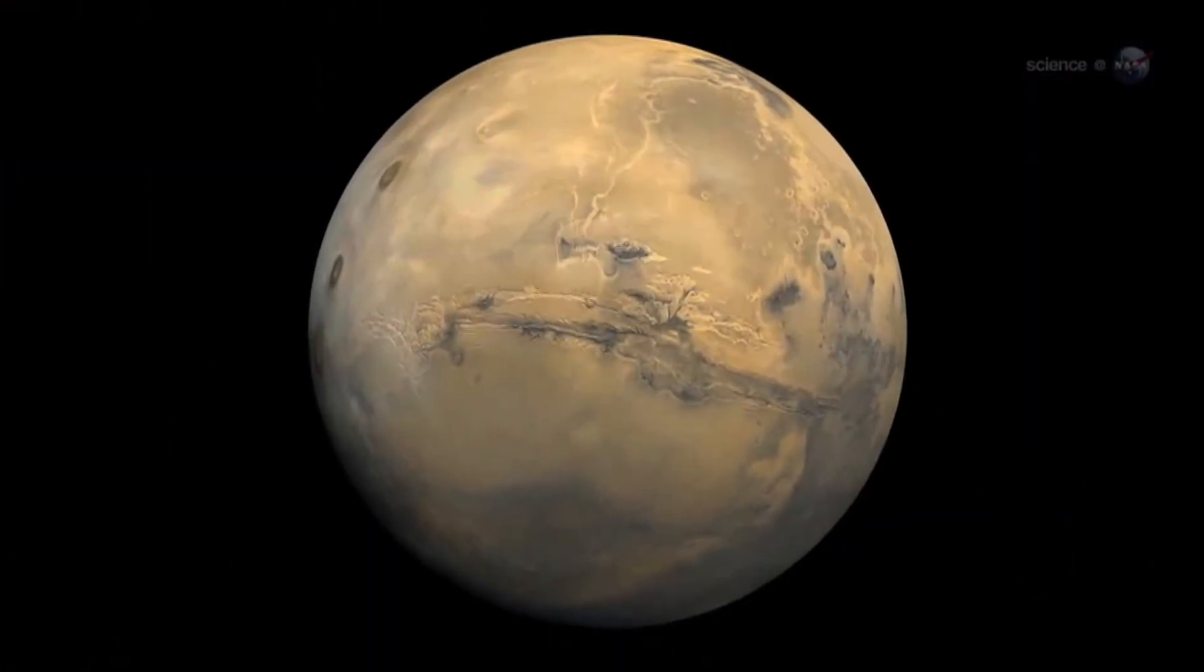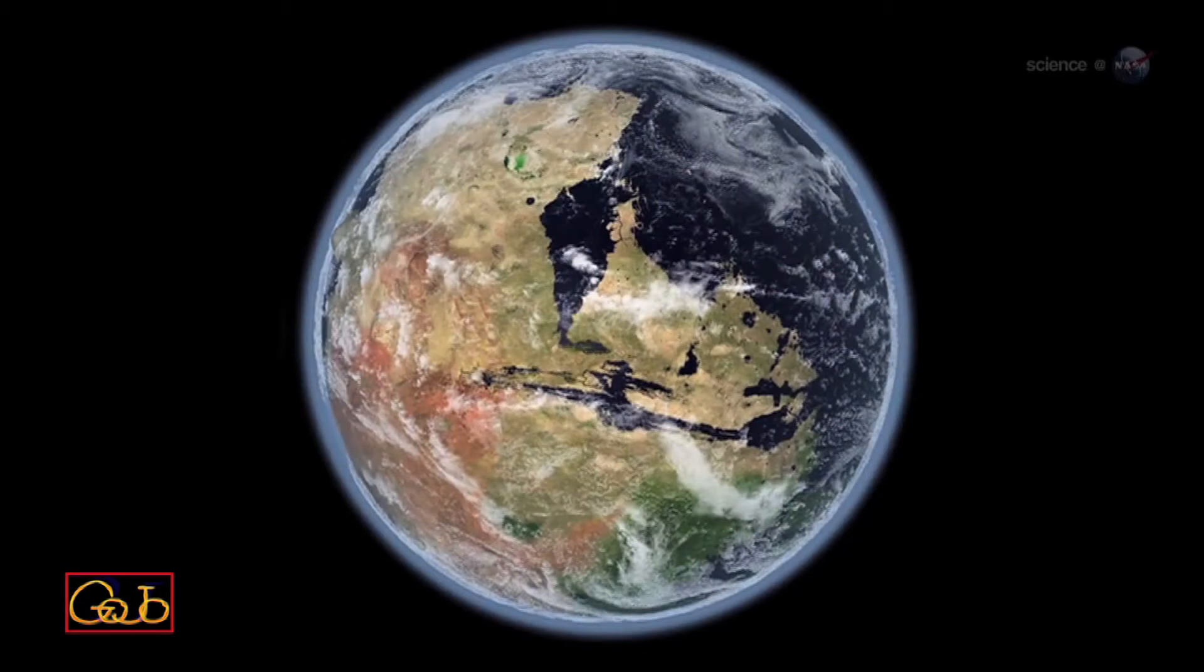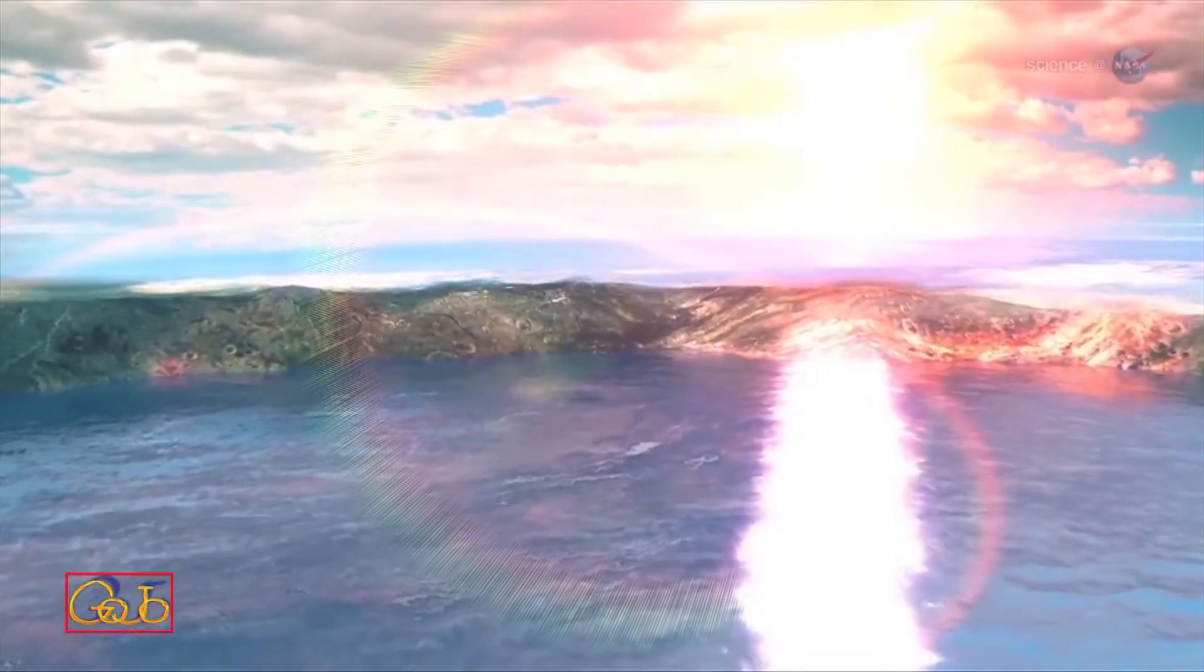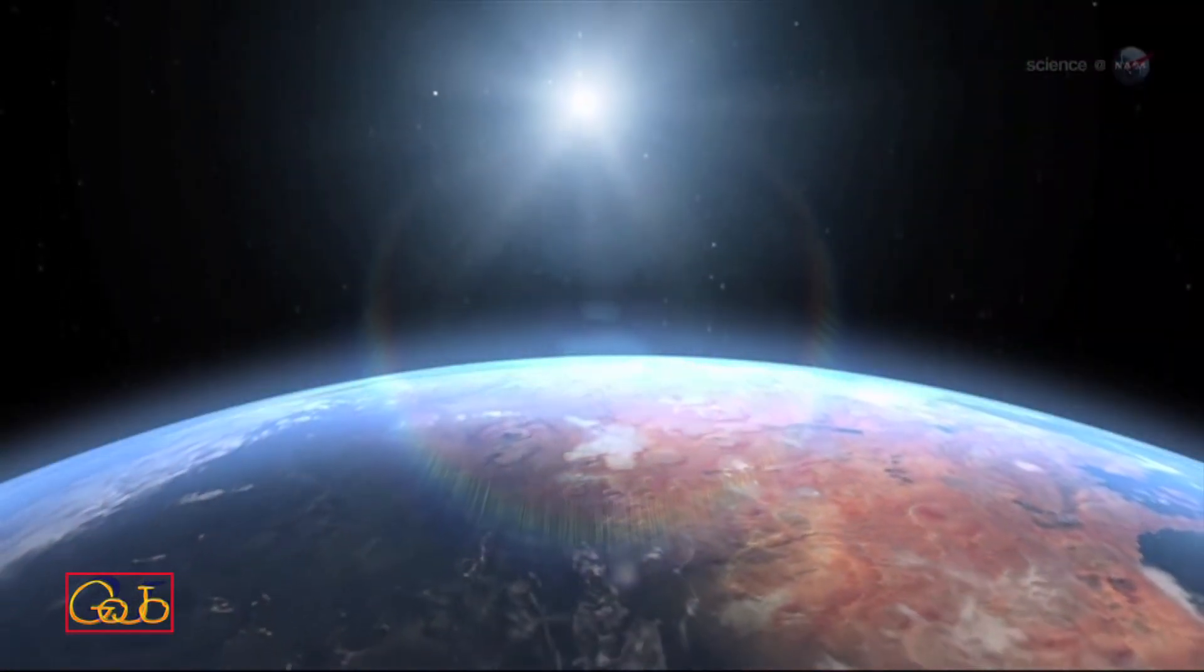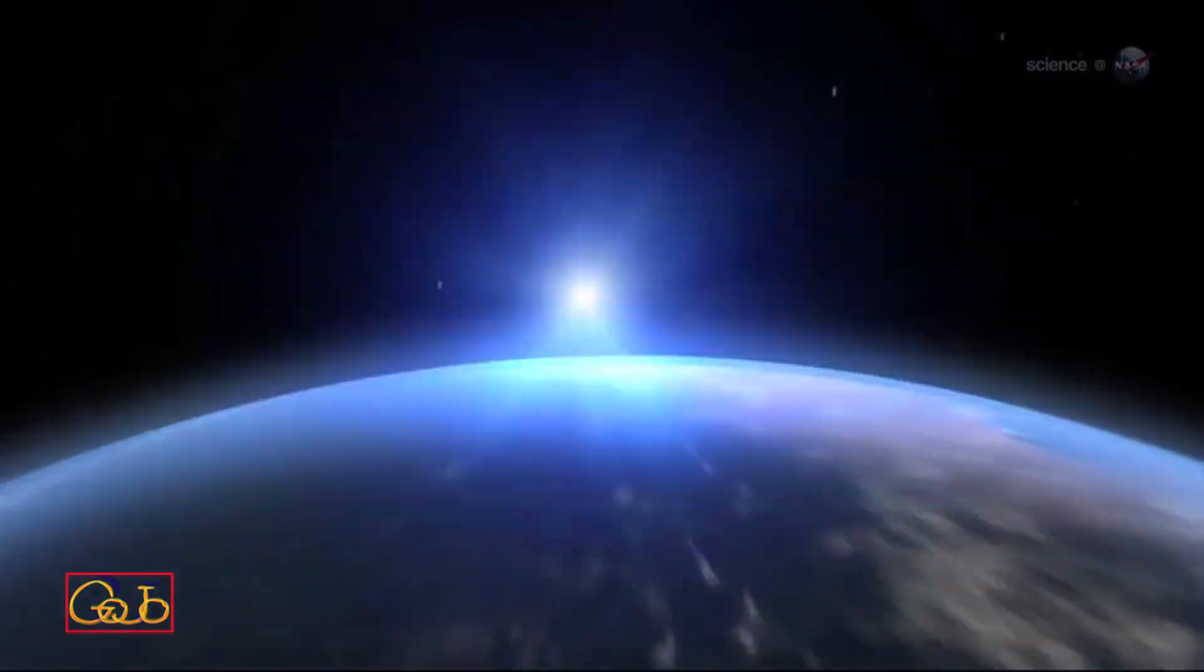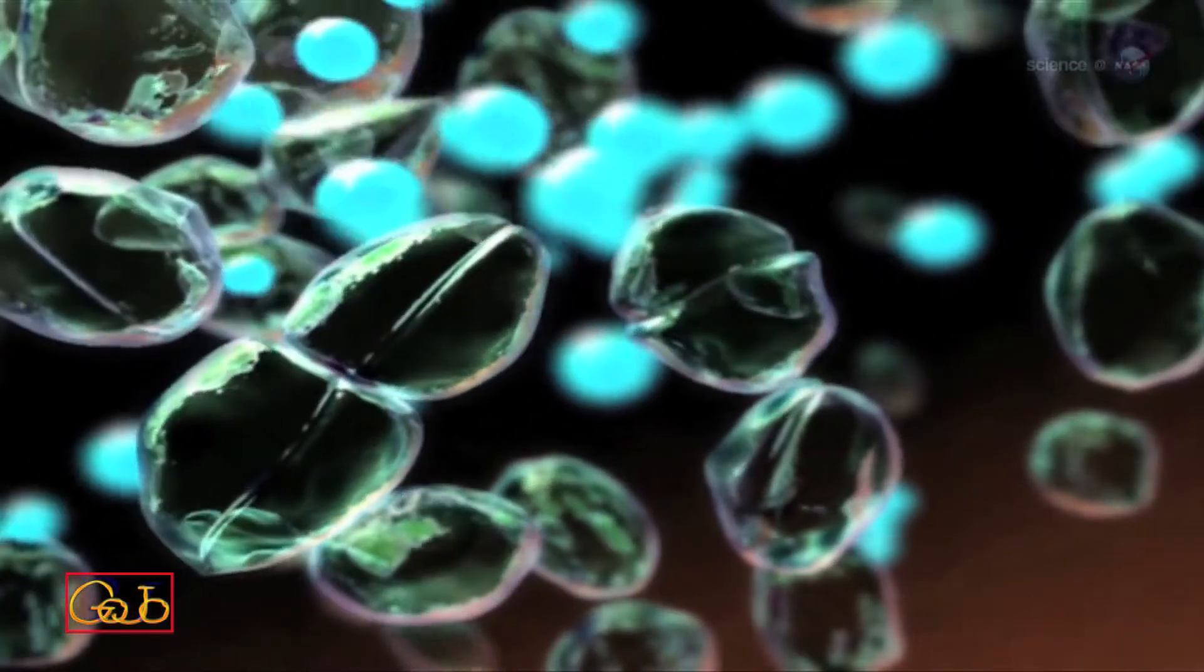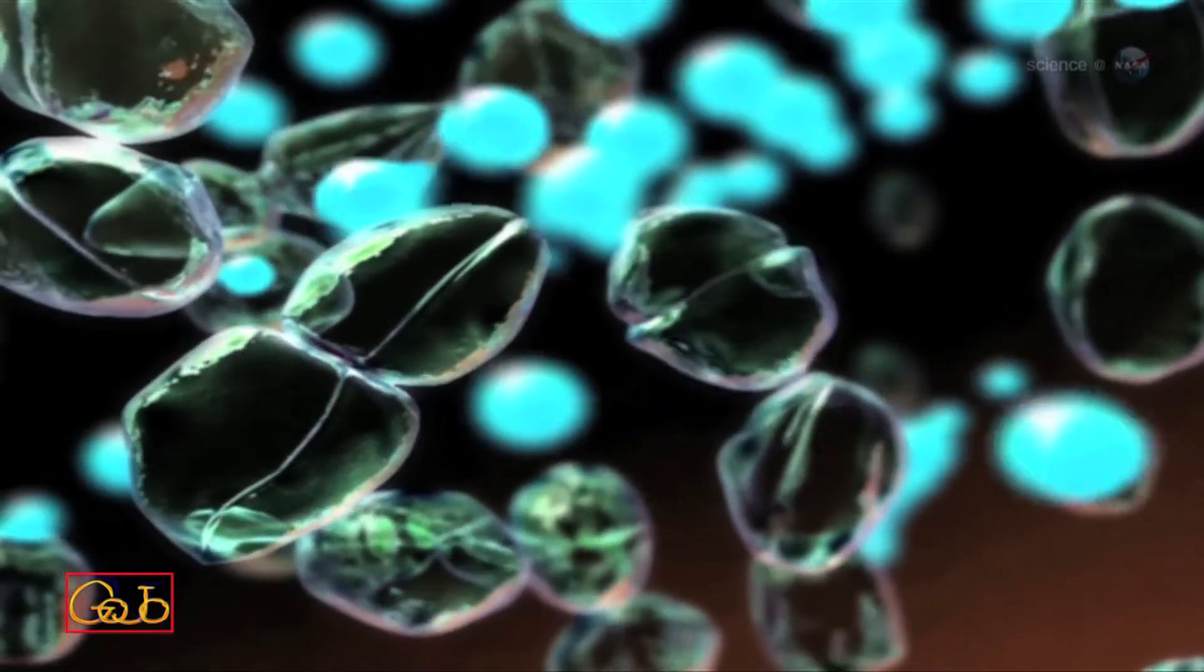Billions of years ago, when the planets of our solar system were still young, Mars was a very different world. Liquid water flowed in long rivers that emptied into lakes and shallow seas. A thick atmosphere blanketed the planet and kept it warm. In this cozy environment, living microbes might have found a home, starting Mars down the path toward becoming a second life-filled planet, next door to our own.